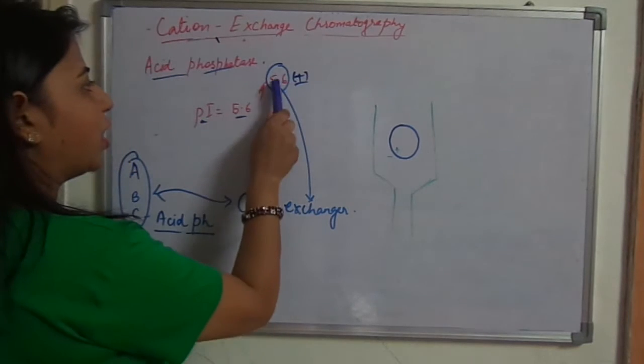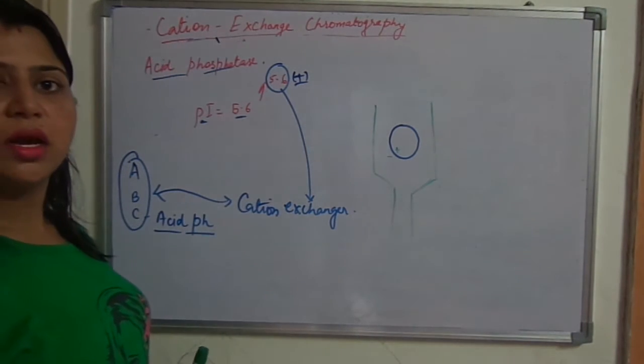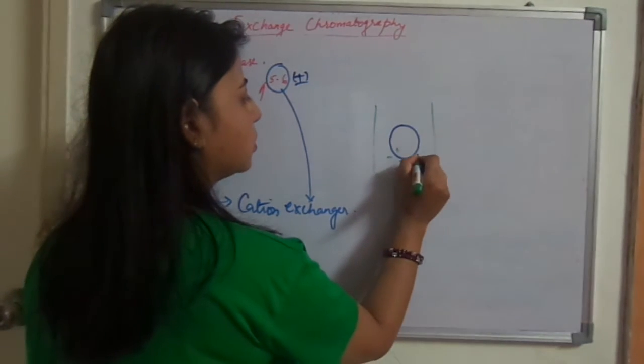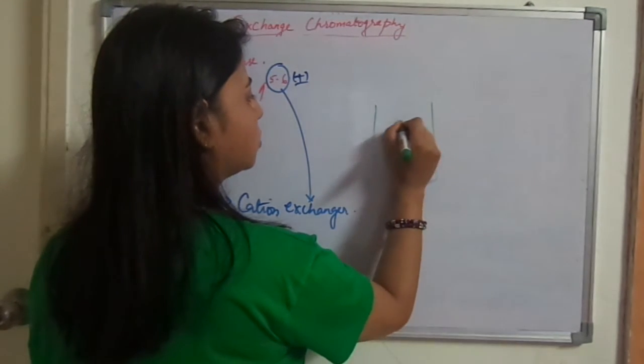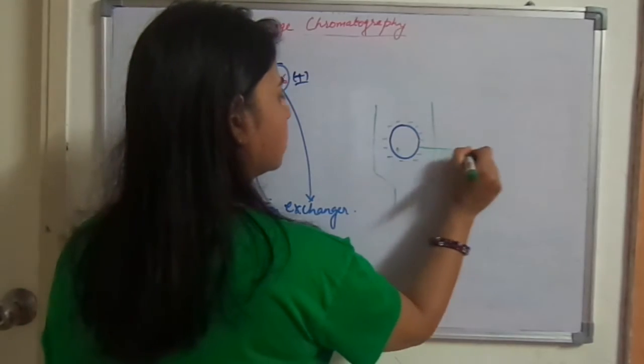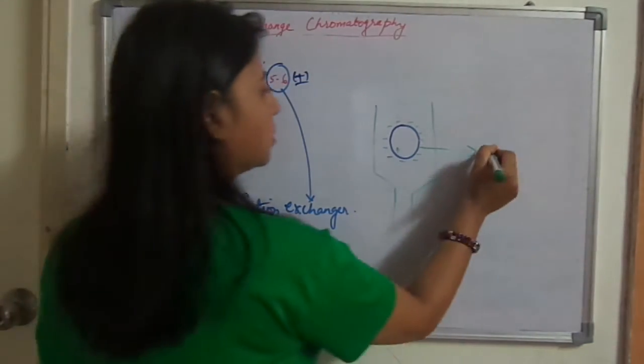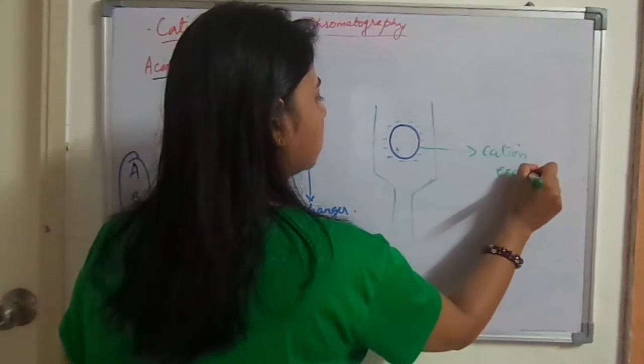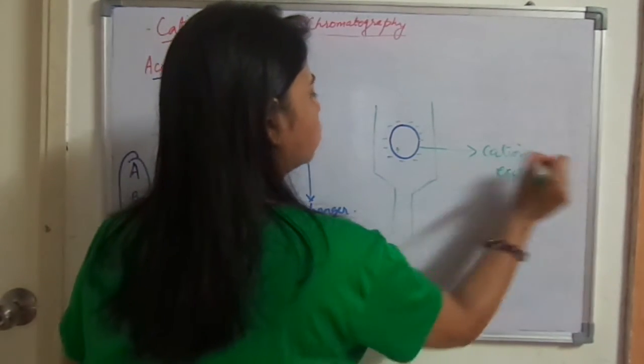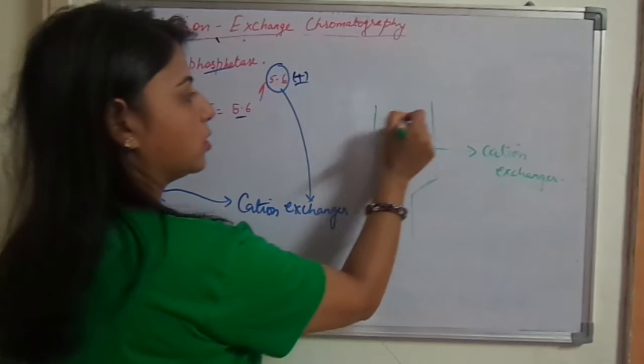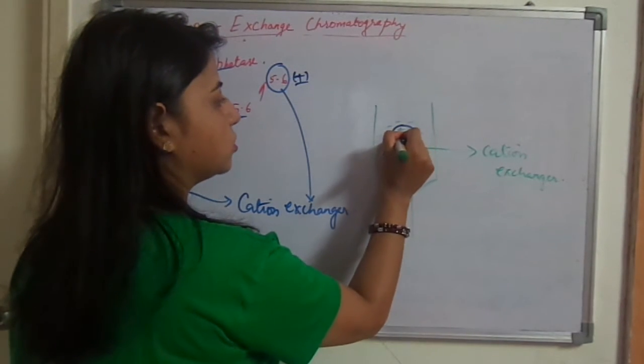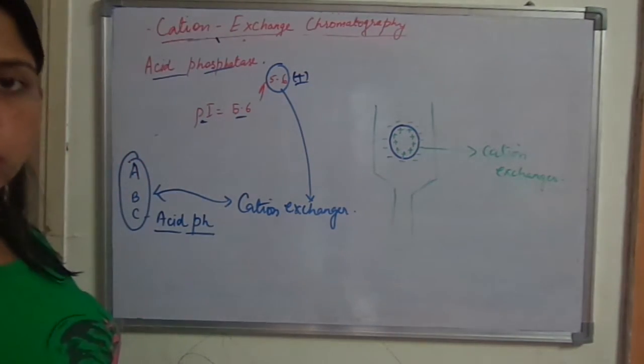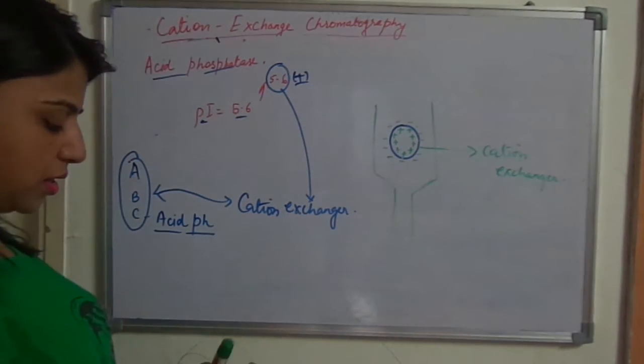So at pH 5.6 this is positively charged. If sample is positively charged, so it will bind to the negatively charged. What is this? This is the cation exchanger. Cation exchanger binds to positively charged cations and always has a negative charge. Inside is positive charge. Binds to or you can say adsorbs to the sample which has negative charge.